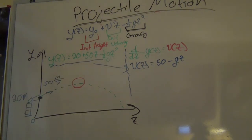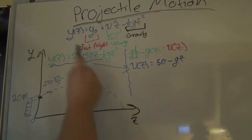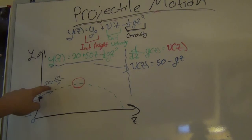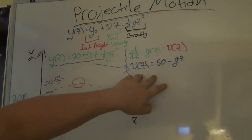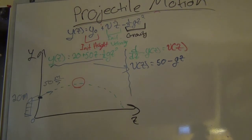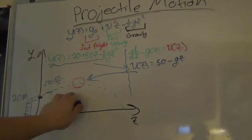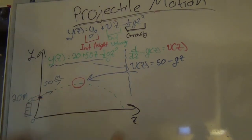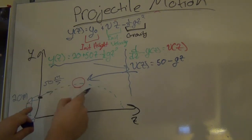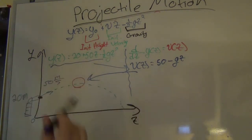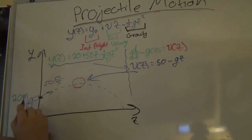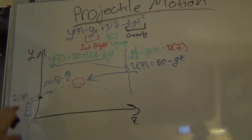You can put in any time and figure out the velocity. But note: this 50 meters per second is the vertical velocity, not the total velocity the projectile is being shot at. That's an important distinction. The total launch velocity is always larger because it's the combination of both vertical and horizontal components.